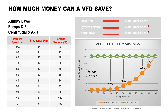Reducing the motor speed more and more will result in less significant energy savings as the curve begins to flatten out. We don't recommend running the motor at less than 30 Hz. At 30 Hz, there's an 88% energy savings, because the fan needs to run fast enough to cool itself.